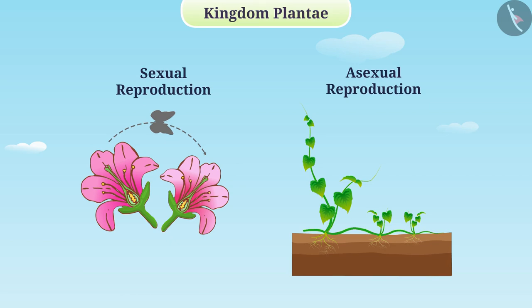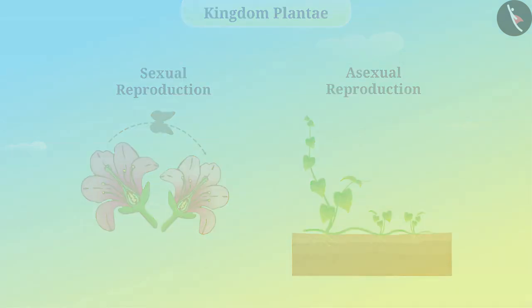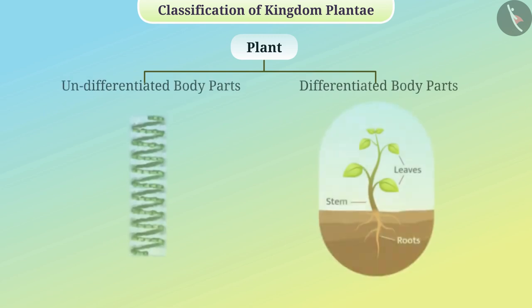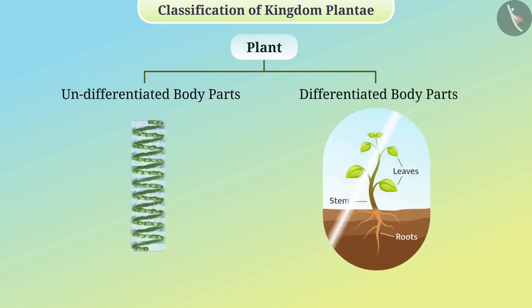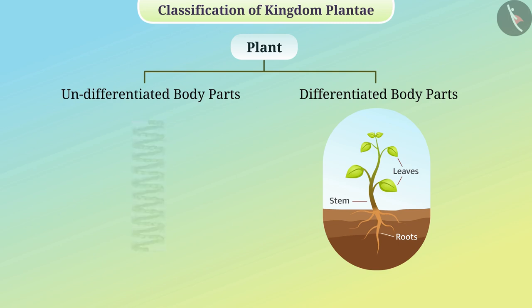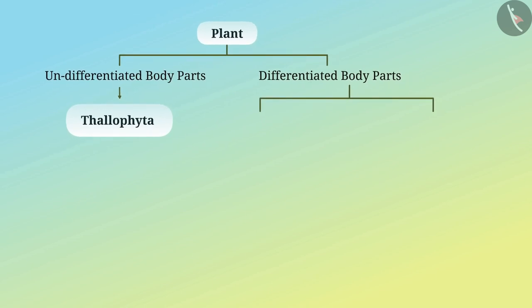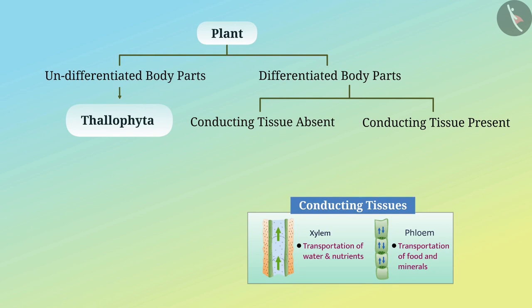Let us now understand the classification of Kingdom Plantae. The first level of classification is based on whether the major body parts of the plant are fully developed or differentiated. Plants whose bodies are without differentiation are placed in the subclass Thalophyta. The next level is based on whether there are specific tissues for the transport of water and other substances; plants without such tissues are placed in the subclass Bryophyta.